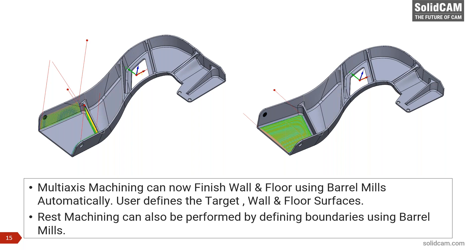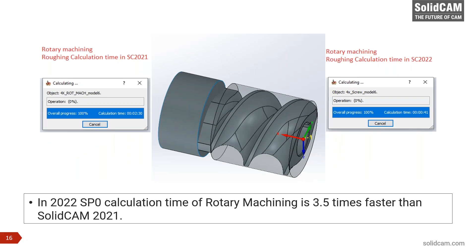We made a dramatic change to our calculation time using Turbo HSR, and the same is reflected in rotary roughing. In 2021, rotary roughing for a particular part used to take two and a half minutes. In 2022, the same part is calculated in 41 seconds — a big shift. It's approximately three and a half to five times faster depending on the part, averaging about four times faster than 2021.